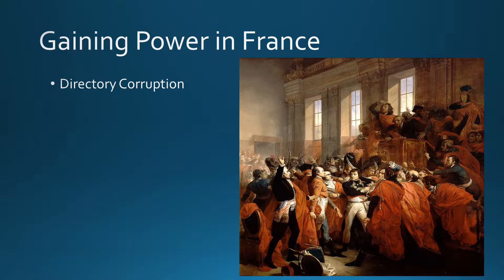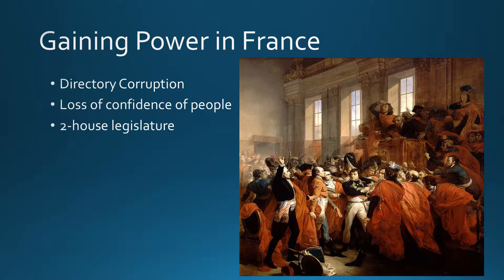After the terror, people desire stability. A new government is put in place — the Directory, the executive branch. The Directory provides stability after the horror of the terror, but it is very corrupt. At first people accept it, but over time they lose confidence as people realize this government is not trying to help the revolution or better the lives of the French people.